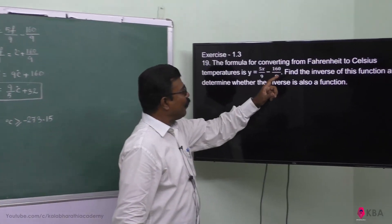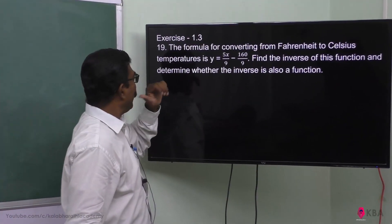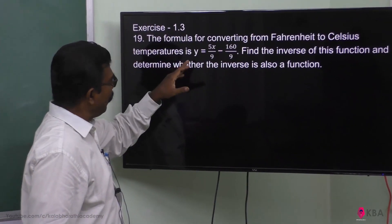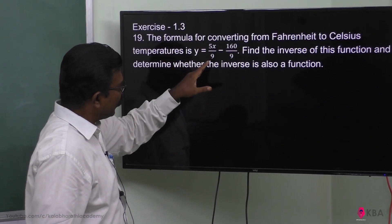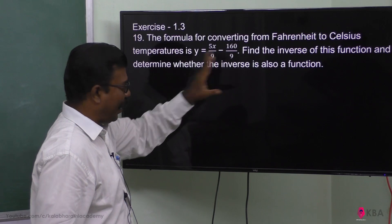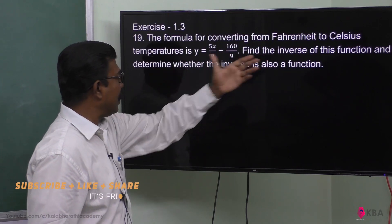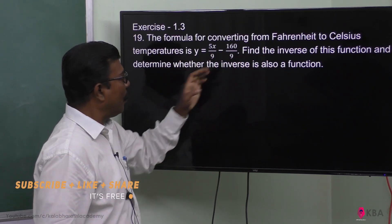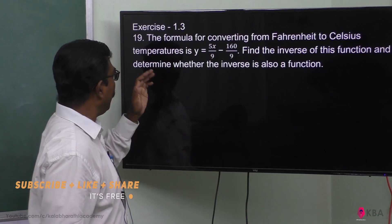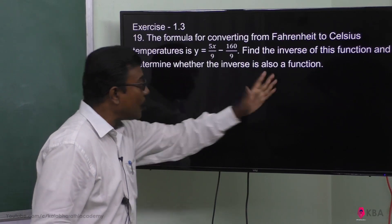The formula for converting from Fahrenheit to Celsius temperatures is given by the expression y is equal to 5x divided by 9 minus 160 by 9. Find the inverse of this function and determine whether the inverse is also a function.